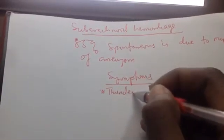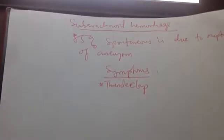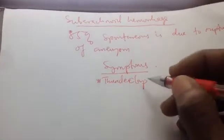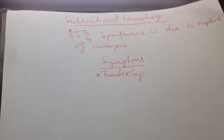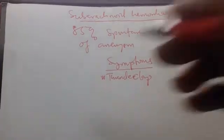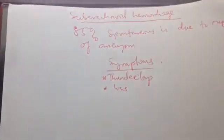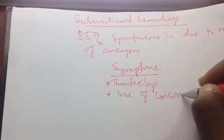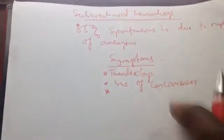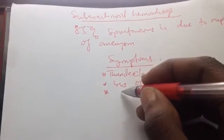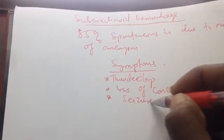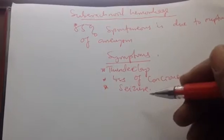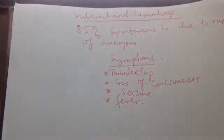When the aneurysm ruptures, the patient experiences a sudden and abrupt severe headache — termed a 'thunderclap' headache — because it is severe and sudden, not gradual. Someone will feel as if they were kicked in the head. There is also loss of consciousness due to the intracranial bleeding and expanding hematoma. The patient may develop seizures, and sometimes fever, due to the raised intracranial pressure.